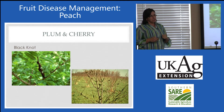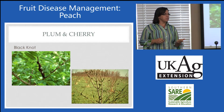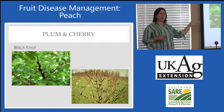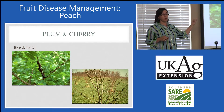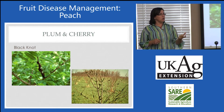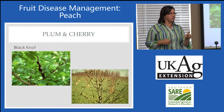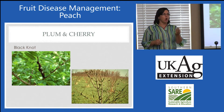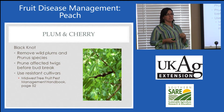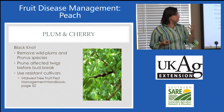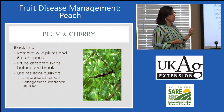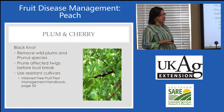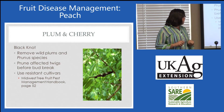Black knot of plum and cherry is really common, especially in our wild prunus species. This pathogen starts sporulating before new growth begins, so it's an early one. Early infections are hard to see the first year — they're softer and greener. It's the second year that you see the black, gnarly knots, which can just be cut out and removed. Sanitation, pruning, and removing wild plum species — those seem to be everywhere — are the key management strategies. Resistant cultivars are also listed in the Midwest Tree Fruit Pest Management Handbook.